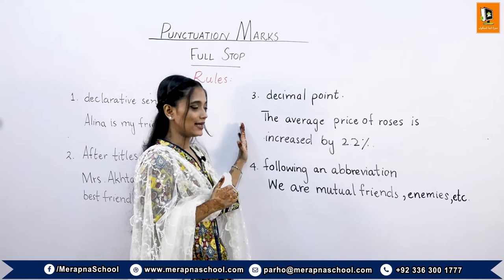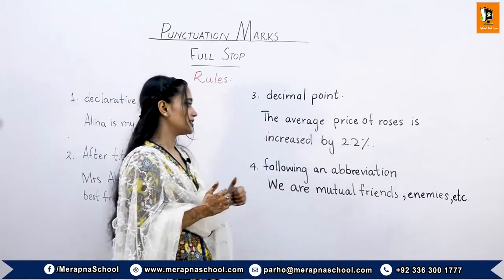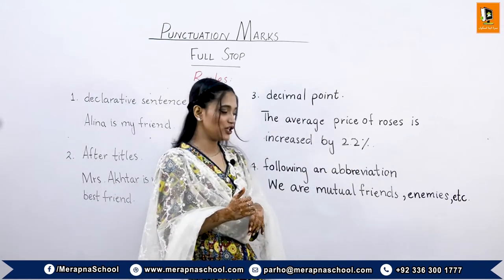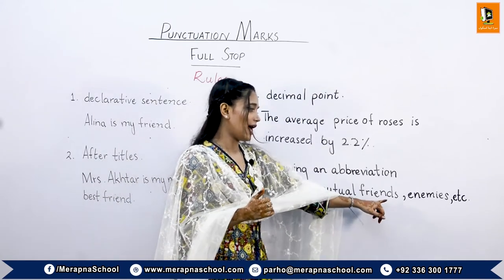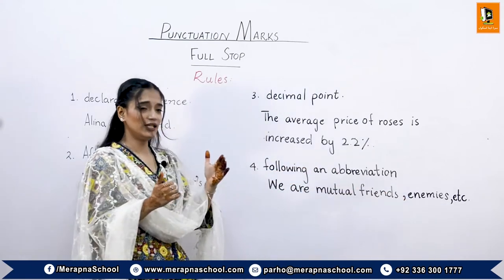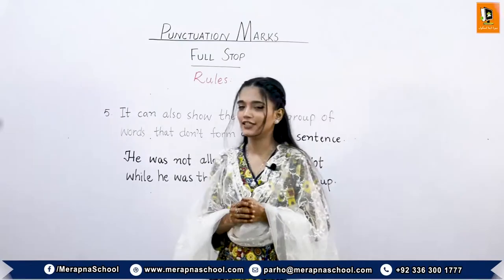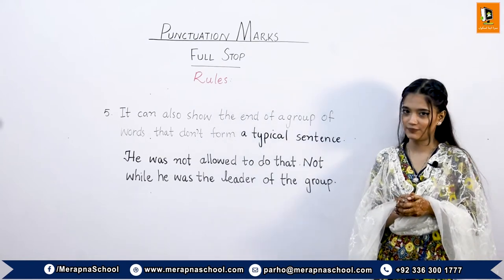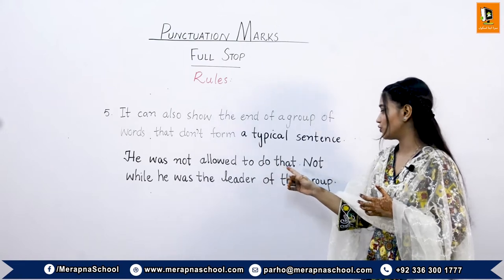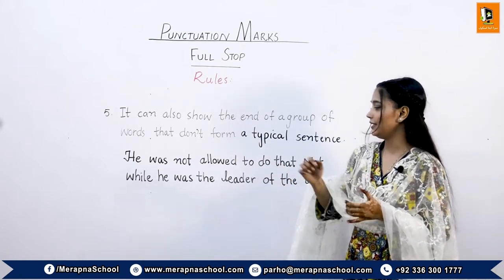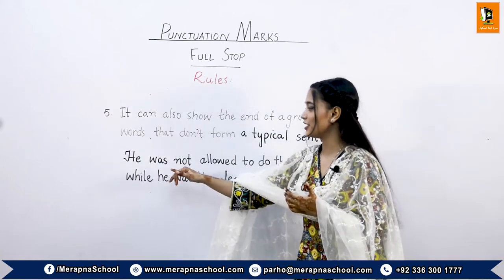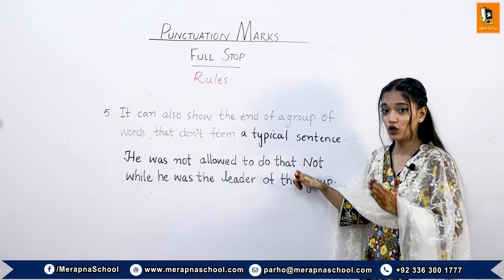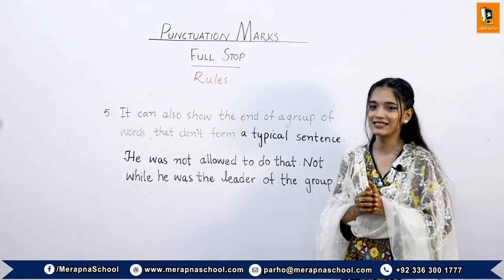For example: 'The average price of roses has increased by 2.2 percent.' The fourth rule is following an abbreviation, such as etc., approx., and similar abbreviations. The fifth and last rule is that a full stop can also show the end of a group of words that don't form a typical sentence — for example, 'He was not allowed to do that. Not while he was the leader of the group.'